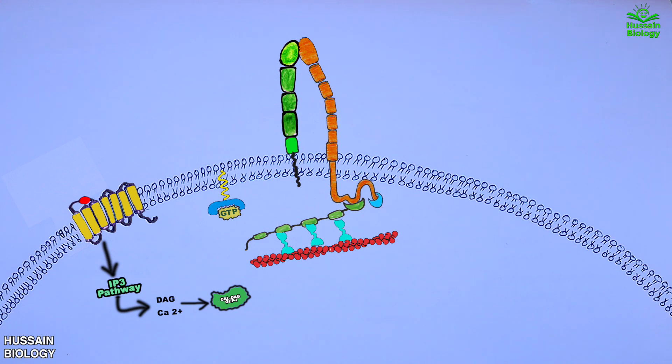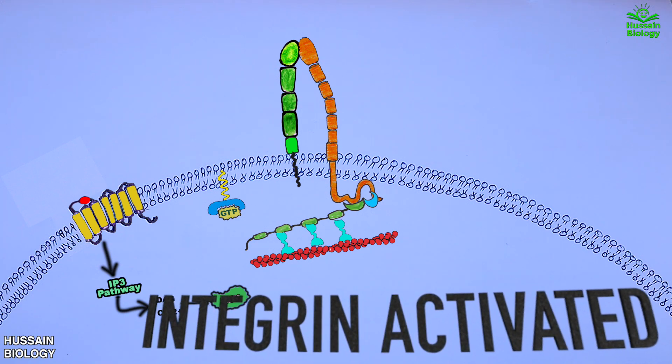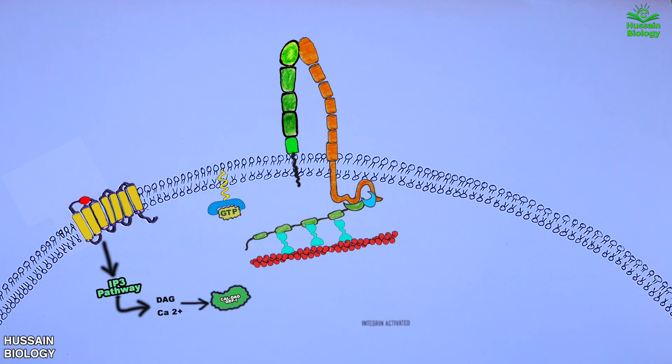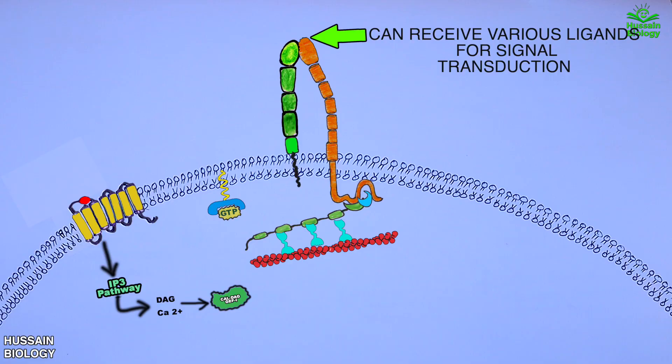So this is how inside-out signaling works on the activation of integrin molecule on the cell membrane, thus giving us open extended active form of integrin on the cell which can receive many different ligands to drive the pathways.